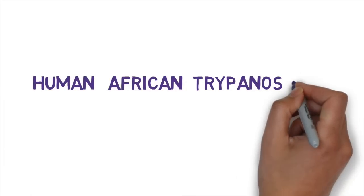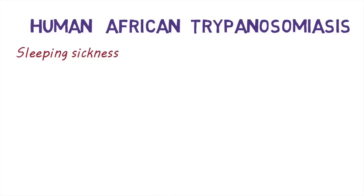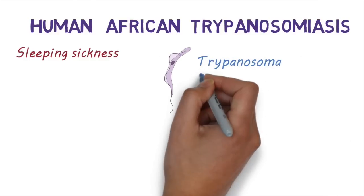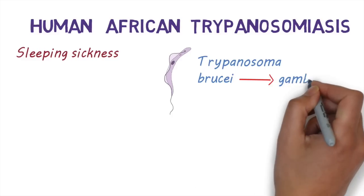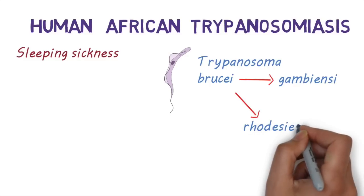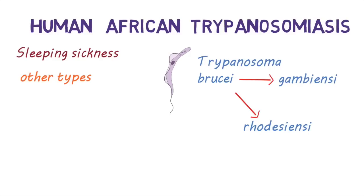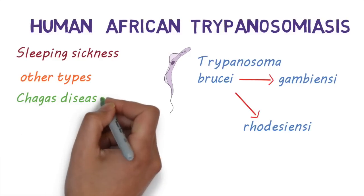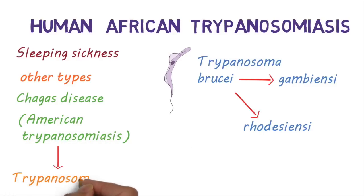Human African Trypanosomiasis, also known as sleeping sickness, is a disease caused by a group of parasites called Trypanosoma brucii. The two main types causing human disease are Trypanosoma brucii gambiensi and rhodesiensi. There are other types of Trypanosoma brucii which cause animal disease and very occasionally infect humans. Chagas disease, also known as American Trypanosomiasis, is a different disease caused by Trypanosoma brucii.